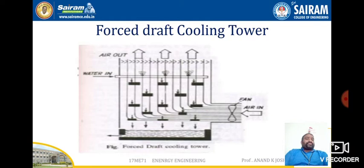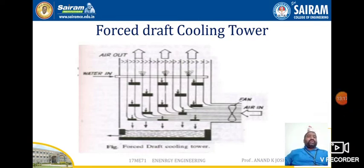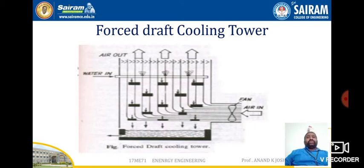In the forced draft cooling tower, the fan is located at the base of the tower and air is blown upward by the fan through the descending water. The entrainment of water is removed by a drift eliminator at the top. This arrangement uses a fan to force airflow, which is why it is called a forced draft cooling tower.